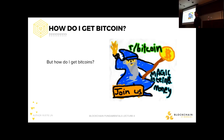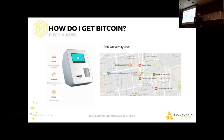Now that you have wallet software to keep track of your private key, how do you get Bitcoin in the first place? There's a Bitcoin ATM on 1250 University Avenue. You take your Bitcoin smartphone wallet app, which has a QR code with your address, scan it in, put in US dollars, send the money, and you have Bitcoin.